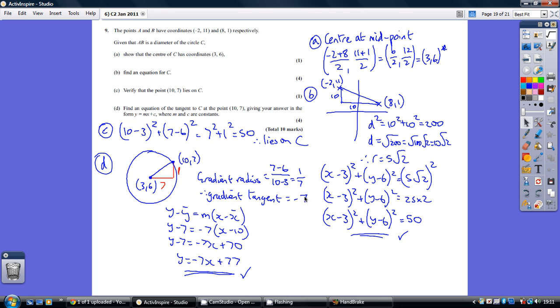So, we now know a point on the tangent, which is 10, 7. We know the gradient. So, we can use this classic C1 formula for equation of a line, plugging in our points on the line and plugging in the gradient, rearranging to get it in the format of y equals mx plus c and we get this as a final answer.